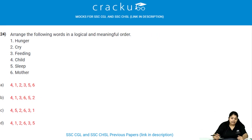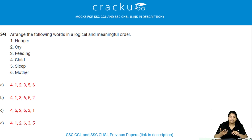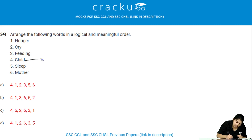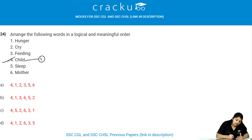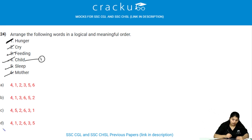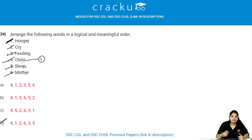Arrange the following words in a logical and meaningful way: hunger, cry, feeding, child, sleep, mother. Every option starts with child as the first element — so child comes first. Then when the child is hungry, it cries. The mother feeds the child, and then the child goes to sleep. Therefore the answer is option D: child, hunger, cry, mother, feed, sleep.